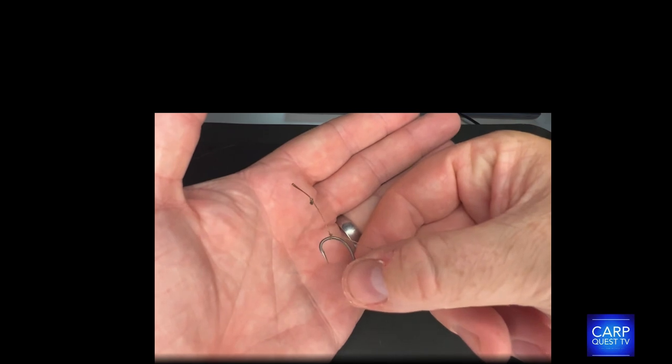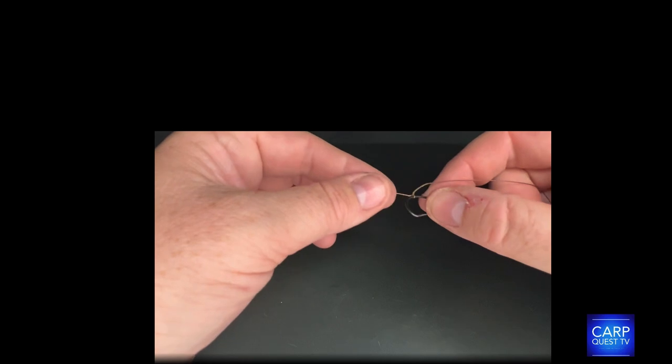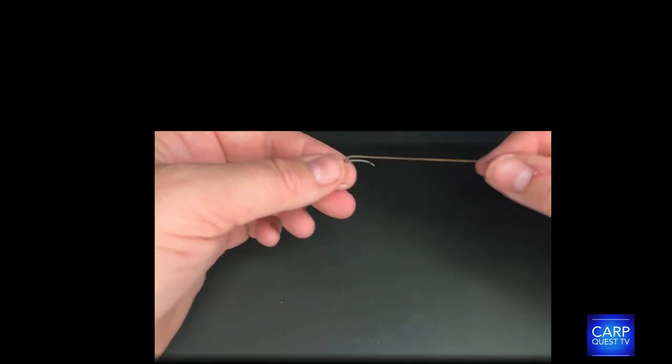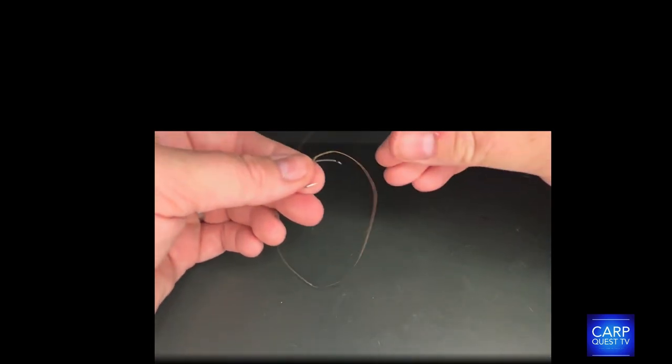So quick look at this now. Again, when we're doing the knotless knot we always go through the back of the eye. I know it's an obvious one, but worth telling people because they may be new to this as well.